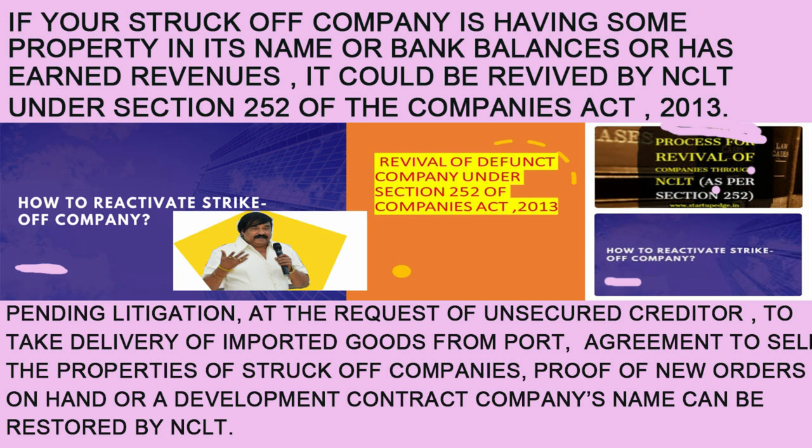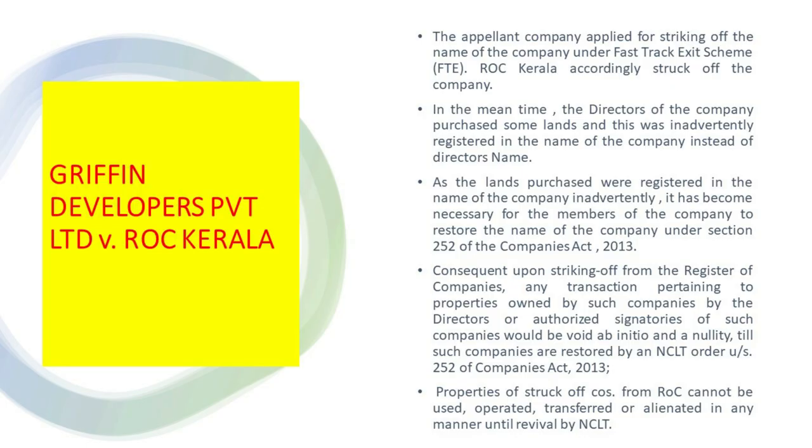NCLT across the country has ordered for revival and restoration of the name of the company when there is pending litigation, at the request of the unsecured creditor, or to take delivery of the imported goods from the port. When there is an agreement to sell the properties of struck off companies, or proof of new orders on hand, or a development contract in the company's name, companies can be restored by the NCLT. We will discuss these as precedents.